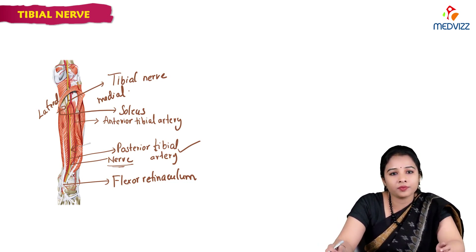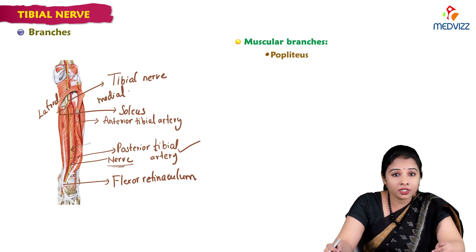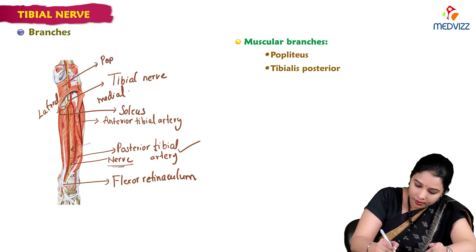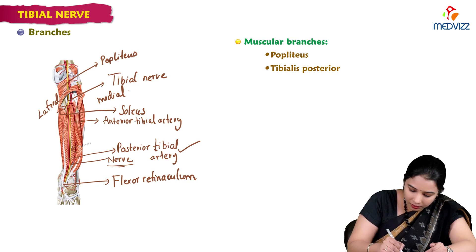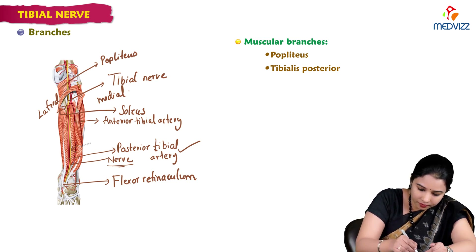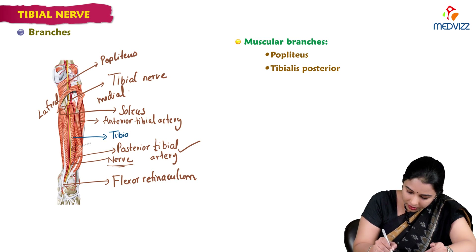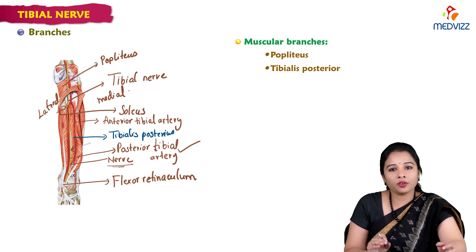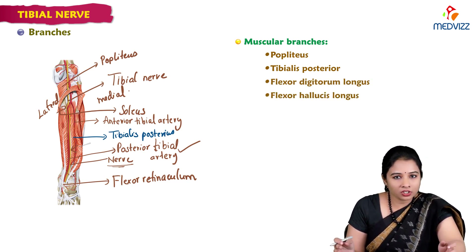Branches of the tibial nerve include muscular branches: it supplies popliteus, tibialis posterior — which is a deeper muscle — and it supplies almost all the muscles in the posterior compartment of the leg, including flexor digitorum longus and flexor hallucis longus.